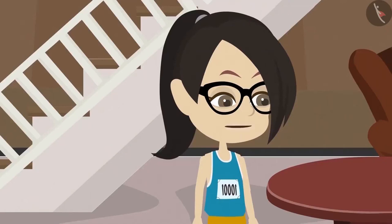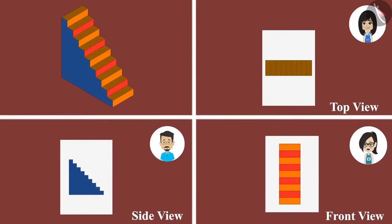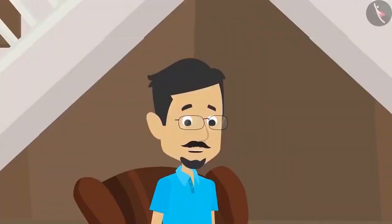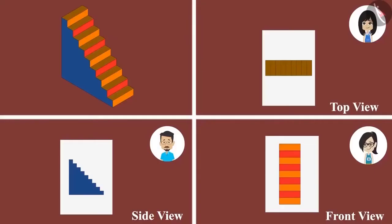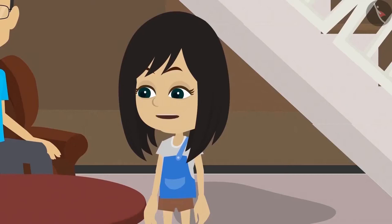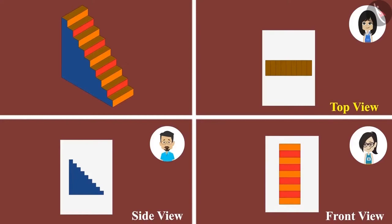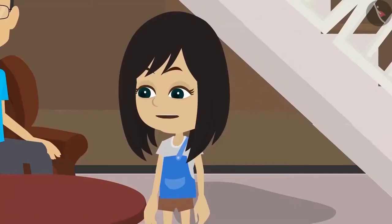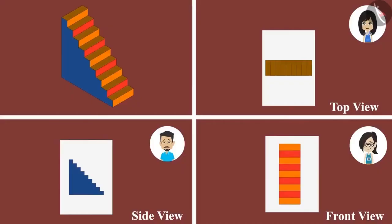Now I have understood what is three-dimension. And that when you look at them from different sides, their shapes appear different. But do you know that to draw the shape of 3D or three-dimensional objects accurately, the drawing is made from three different sides, like the way we drew this staircase. What is this three-sided drawing called? One is called the top view, which tells us how an object will look if seen from the top. This means my drawing is a top view of the staircase, which is a brown-colored rectangle. Right? Yes, Neha.